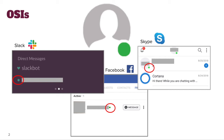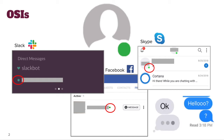Importantly, I want to distinguish a couple of things that are not OSIs. For example, read receipts and typing indicators, and lots of other interface elements, might reveal that someone is online or when they were online previously. But their main goal is not to show whether someone is online, and so these were out of scope for this study.